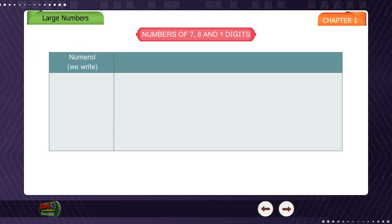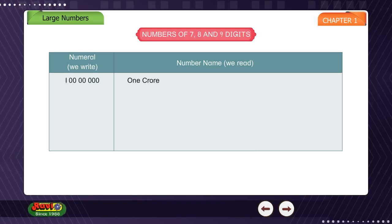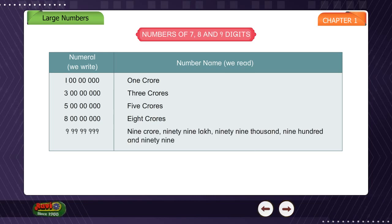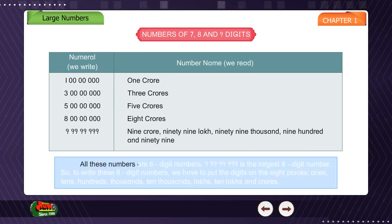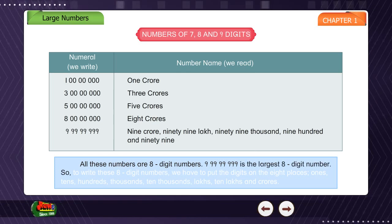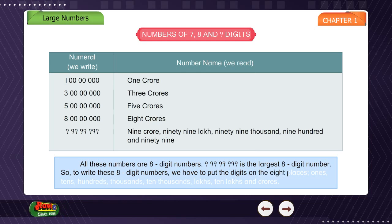The numerals we write and their number names: 1 crore, 3 crores, 5 crores, 9 crores; and 9 crore 99,99,999. All these numbers are 8-digit numbers. 9 crore 99,99,999 is the largest 8-digit number. To write these 8-digit numbers, we have to put the digits on 8 places.